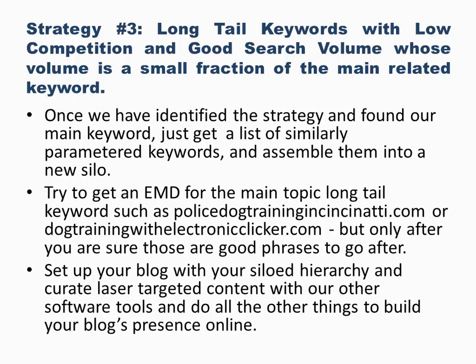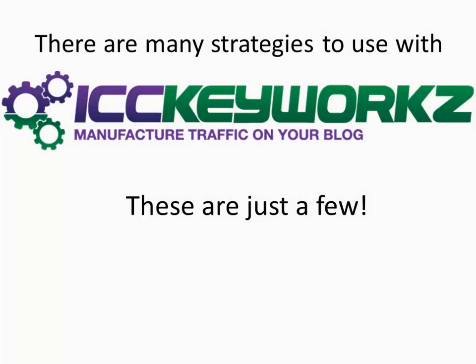Once you've identified the strategy with your keywords and found your main keyword, get that list of similarly parameterized keywords and assemble them into your new silo. Try to get an exact match domain for the main topic long-tail keyword — such as policedogtrainingcincinnati.com or dogtrainingwithelectronicclicker.com — only after you're sure those are good phrases to go after. Set up your blog with your siloed hierarchy and curate laser-targeted content with our other software tools.